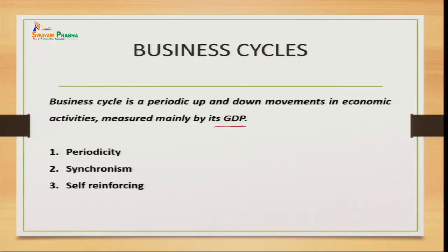Business cycle is basically considered as an up and down movement taking place in economic activities. Whenever we talk about economic activities, it relates to the goods and services being produced in the economy. The up and down movements taking place in those economic activities are referred to as the business cycle. We measure these changes with the help of GDP, which helps us know how much goods and services are being produced in an economy during a financial year.